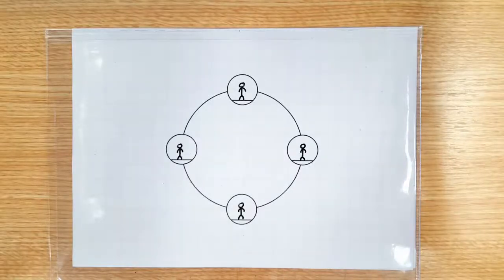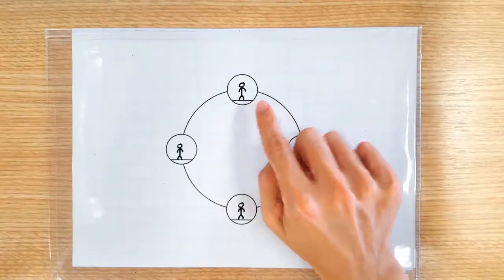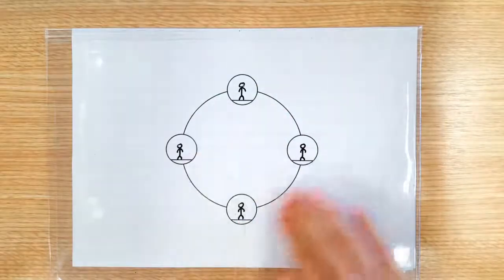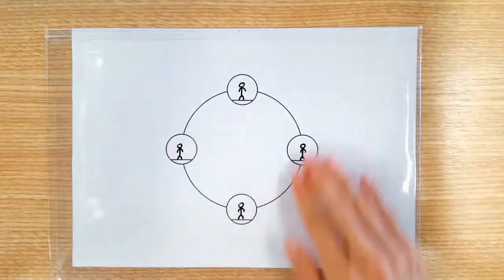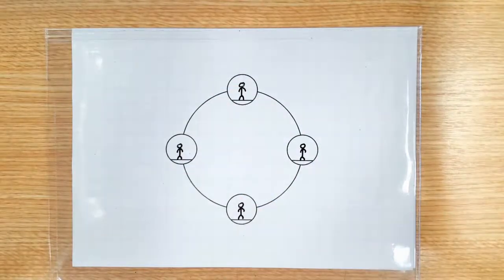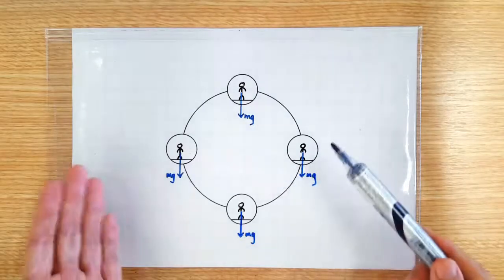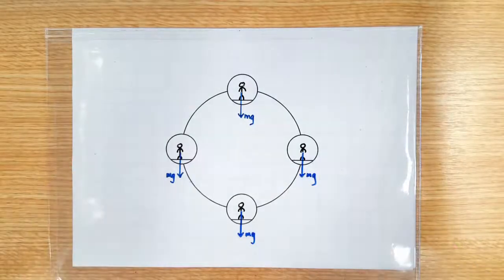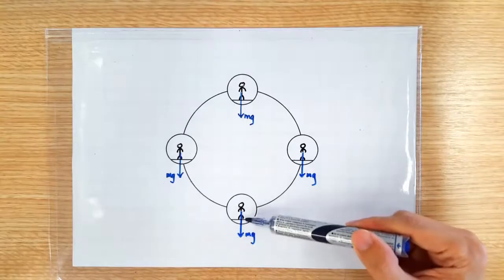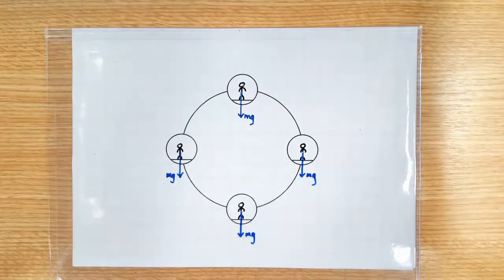In this video I'm going to explain why a man's weight changes during a ferris wheel ride. The man's true weight of course doesn't change, so what changes must be the normal contact force between the man and the floor.